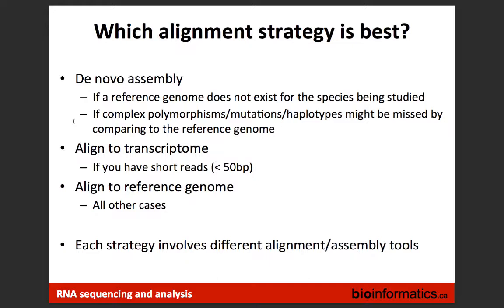A question was raised about why longer reads require aligning to the genome rather than the transcriptome. With short reads, there's less likelihood they would span exon-exon boundaries. With longer reads, you can align to the genome but you have to use splice-aware aligners, since long reads can span multiple exons. You can't simply choose an aligner that isn't splice-aware if your long reads span multiple exons.